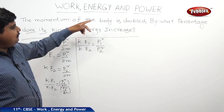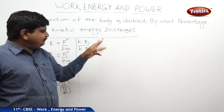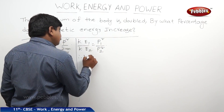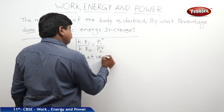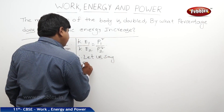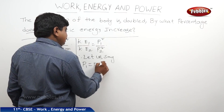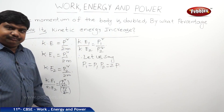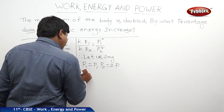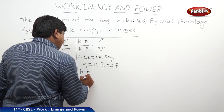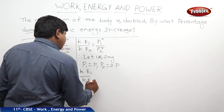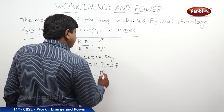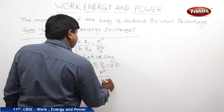The momentum of the body is doubled. Let us say the original momentum P1 is equal to P. Then P2, which is doubled, is equal to 2P. Therefore KE1 by KE2 is equal to P1 squared — that is P squared — divided by P2 squared, which is 4P squared.